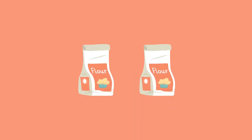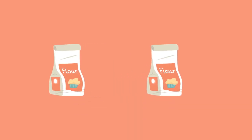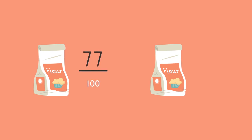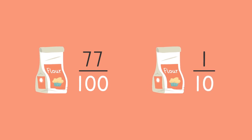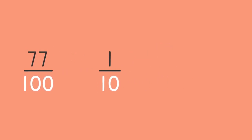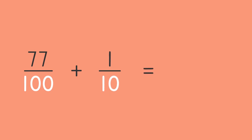Let's practice adding the leftover bags of flour together. One bag has seventy-seven hundredths of flour and the other bag has one tenth. We are solving seventy-seven hundredths plus one tenth. First, make sure both fractions have the same or like denominators. Tenths and hundredths are not like denominators.